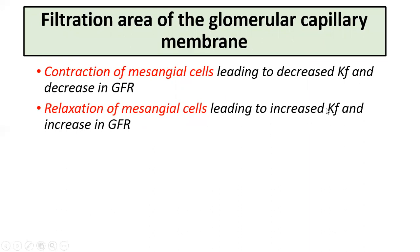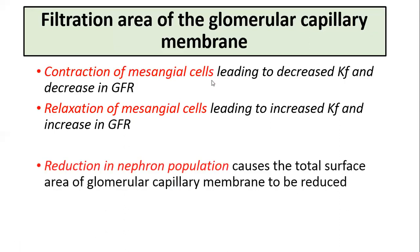Relaxation of mesangial cells increases the filtration coefficient and the glomerular filtration rate. In diseases causing destruction of nephrons, the number of functional nephrons is reduced, which also reduces the total surface area of the glomerular capillary membrane and may further reduce the glomerular filtration rate.